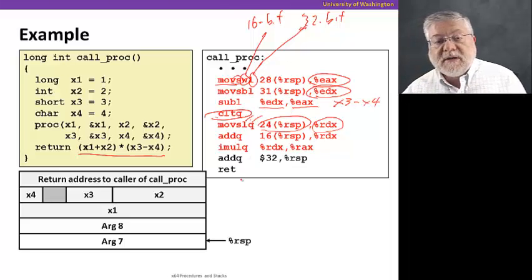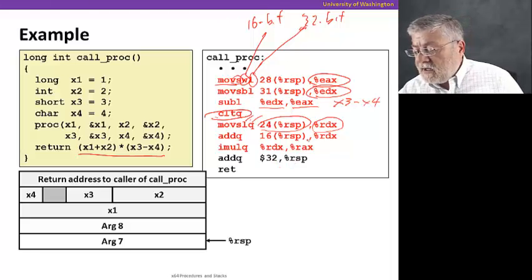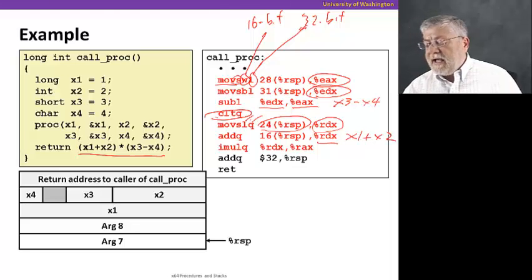And then adds the already 64-bit value of X1 also to RDX. So here we will have X1 plus X2 now as the result.